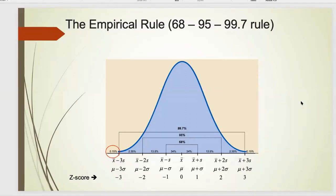The empirical rule has three numbers: 68, 95, and 99.7. Each represents a percentage — so 68 represents 68%, 95 means a probability of 95%, and 99.7 is also a probability.